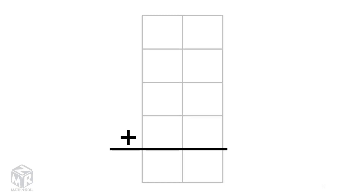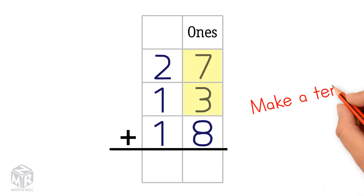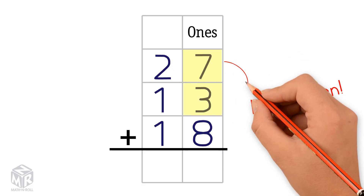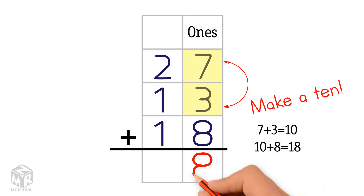Let's try another example: 27 plus 13 plus 18. We can make a 10 using 7 and 3. 7 plus 3 equals 10, plus 8 equals 18. We put the 8 in the ones column and the 1 in the tens column.